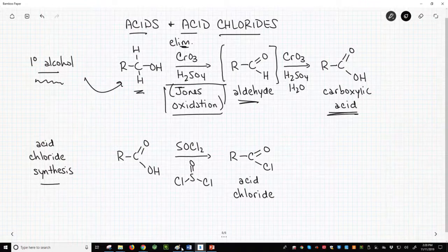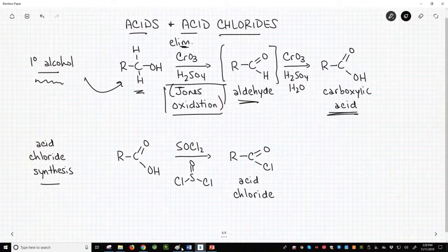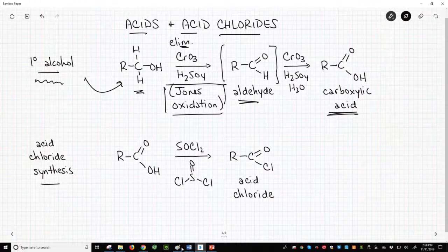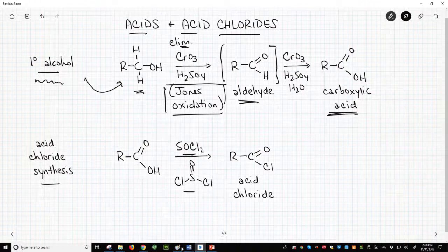Acids are not often used directly to make acid derivatives. Instead, the carboxylic acid is converted to an acid chloride by a reaction with thionyl chloride, SOCl2, and here is the structure of thionyl chloride.